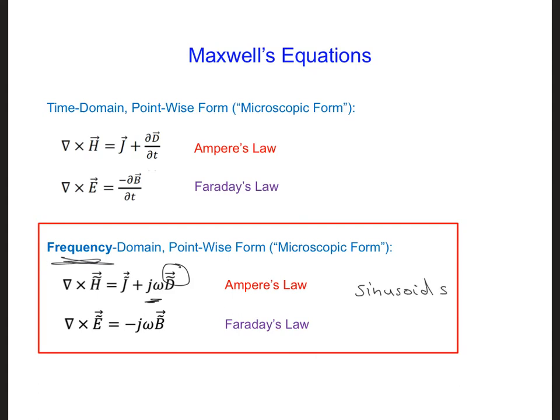The reason we would use the frequency domain form when we have a sinusoidal source, or a source comprised of a finite number of sinusoids, is because these equations have omega in them, which is equal to 2 pi f, the frequency of the wave. This means we have to solve these equations again and again for every frequency of interest.